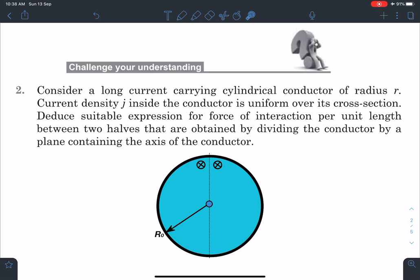This question is from the Pathfinder under the section of Challenge Your Understanding, but this was a relatively easy problem I felt. Here is the statement of this question: Consider a long current carrying cylindrical conductor of radius r.